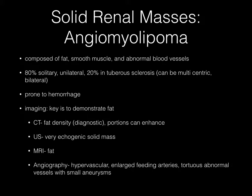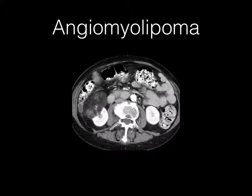On ultrasound, you see a very echogenic solid mass. MRI demonstrates fat. Angiography shows a hypervascular enlarged feeding artery or arteries and tortuous abnormal vessels with small aneurysms. Here is a prime example of an angiomyolipoma involving the right kidney with some elements of enhancement, but the lesion itself does obviously demonstrate macroscopic fat.